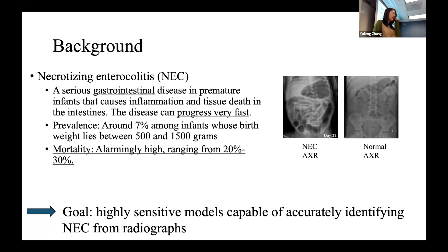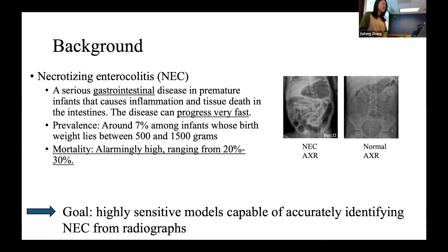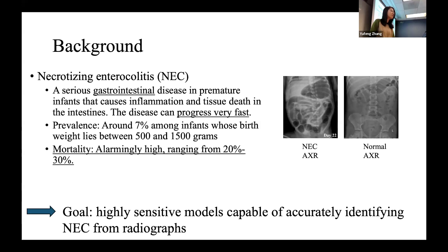NEC is a very serious gastrointestinal disease in premature infants that causes inflammation and tissue death in the intestine. The disease can progress really fast. It occurs in around 7% of infants whose birth weight is between 500 and 1,500 grams, and mortality is alarmingly high, ranging from 20% to 30%.